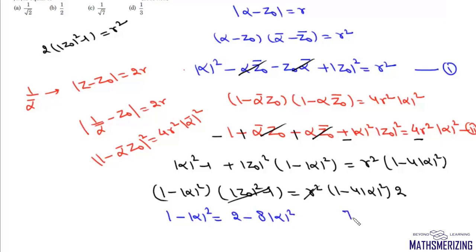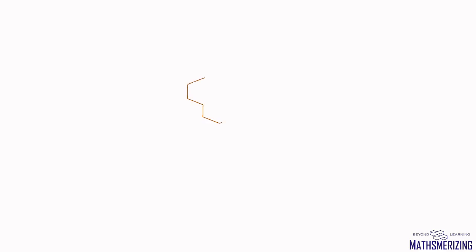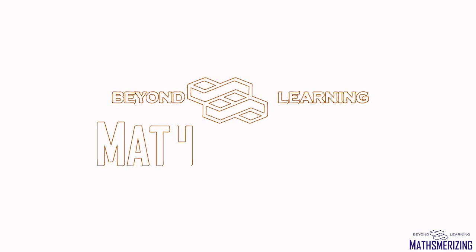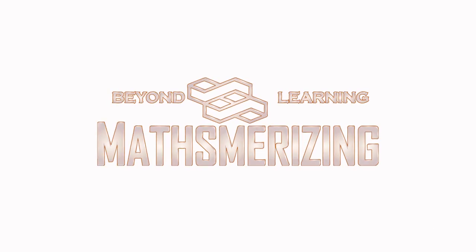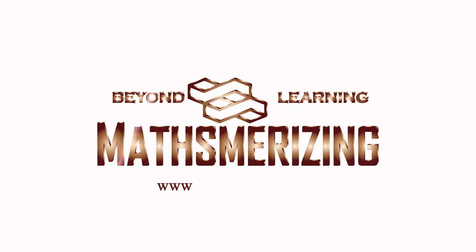That gives 7 times mod of alpha squared equals 1, so mod alpha equals 1 upon root 7. That's option C.